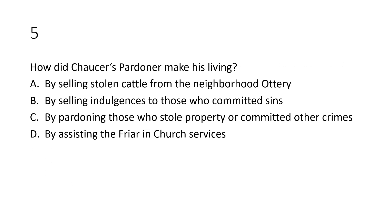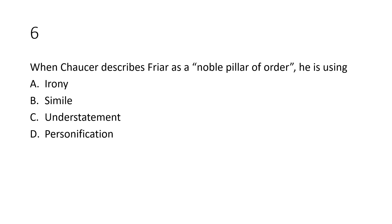Question number five: How did Chaucer's Pardoner make his living? Option A: by selling stolen cattle from the Canterbury neighborhood; option B: by selling indulgences to those who committed sins; option C: by pardoning those who stole property or committed other crimes; option D: by assisting the Friar in church services.